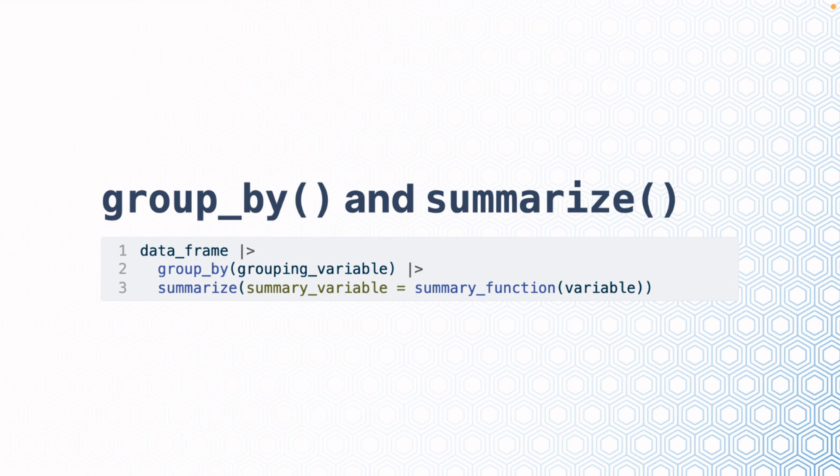The code for group by and summarize looks like this. You start with your data frame, you pipe it, then you use the function group_by, giving it the name of a grouping variable — in the animation we just saw, that would be species. Then you pipe that into summarize, creating a new summary variable which is equal to some summary function, like mean for example, of some variable. The next function we'll discuss is arrange.